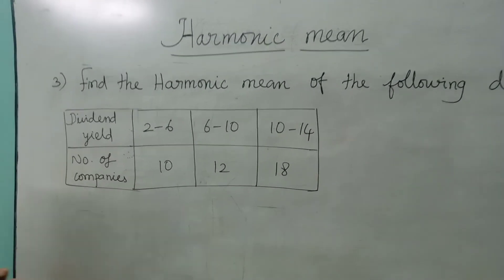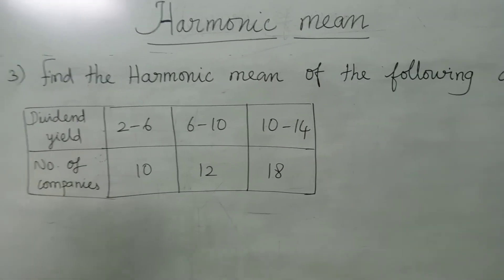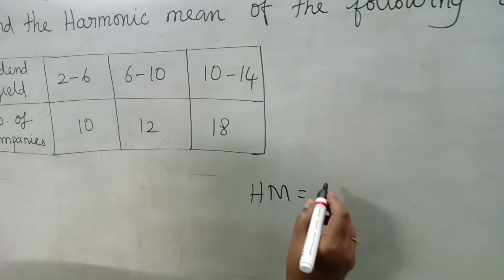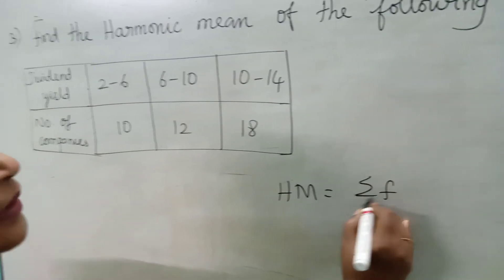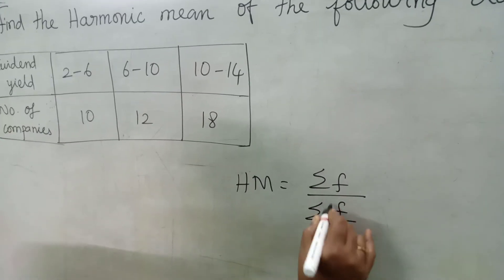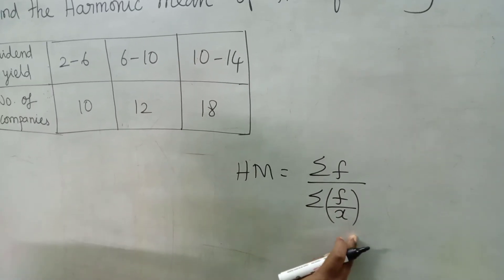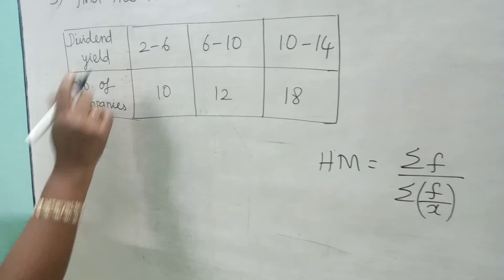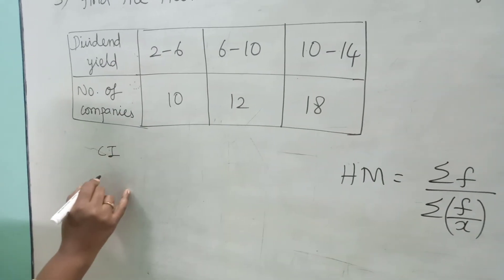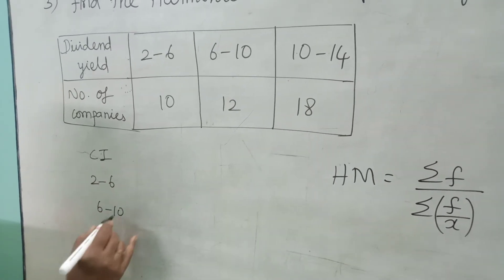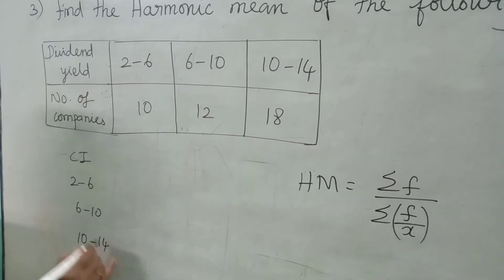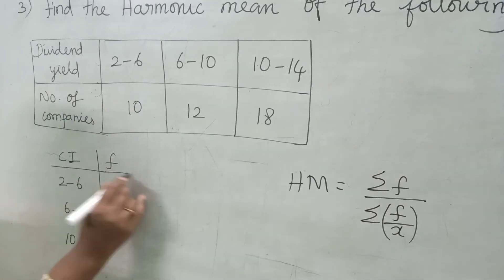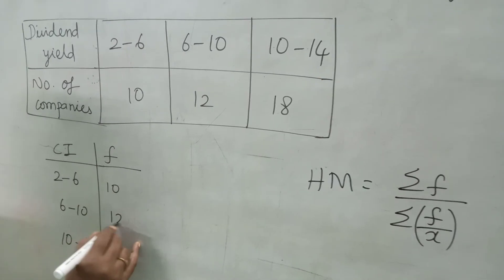This one is the example of continuous data. We know the formula for continuous data. HM is equal to, same as discrete data, sigma F divided by sigma F by X, or sigma F into 1 by X. Both are same. Now we formulate the tabular column. Dividend yield, that is our class interval. Class interval is 2 to 6, 6 to 10, 10 to 14. Then frequency values or number of companies. That is 10, 12, 18.